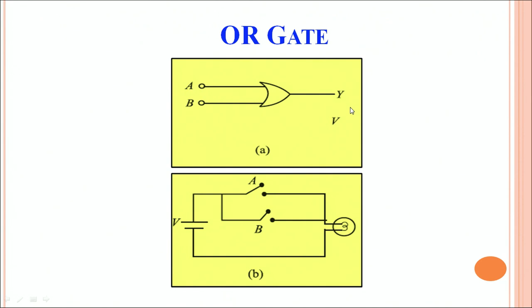Using the circuit in a similar way, we see that there is a slight difference in the arrangement. Because of this difference, inputs A and B are arranged in parallel so that only when both A and B are open, which means A equals 0 and B equals 0, the bulb does not glow.